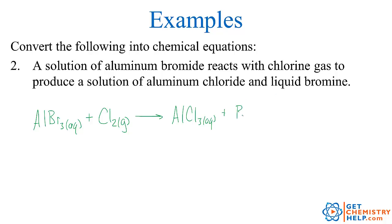And liquid bromine. Again, bromine is one of our seven diatomics, so it won't just be Br, it'll be Br2, and it's a liquid, so we put L. So here's our chemical equation for that reaction.